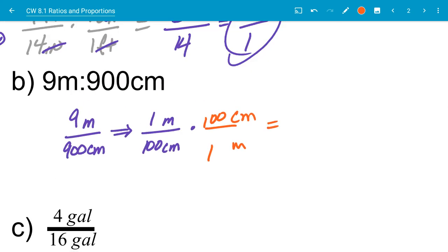So anyways, so when we take a look at this here, my meters cancel out, my centimeters cancel out. And if you look, I have 100 and 100. I can cross cancel that to be one and one. And I'm just left with the ratio of one over one. So that's my simplified ratio.